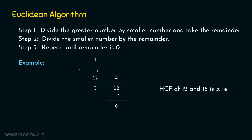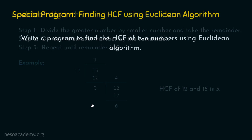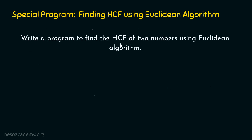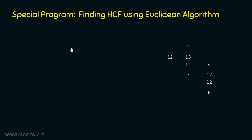The HCF of 12 and 15 is 3 — this is the highest common factor. After getting the remainder as zero, we take the last divisor, which is 3, as the HCF. This is all we need to understand about the Euclidean algorithm. Now we are ready to write the program to find the HCF of two numbers using the Euclidean algorithm.